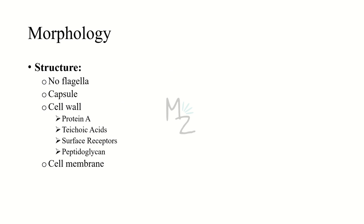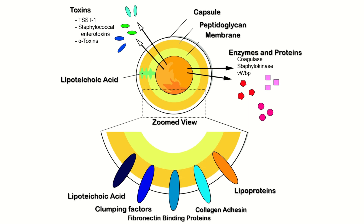Structure: Staphylococcus aureus has no motility apparatus like flagella, but it has a polysaccharide capsule, also called a microcapsule. The cell wall components and antigens include protein A, teichoic acid, surface receptors, and peptidoglycan. I have detailed videos on bacterial structure and Staphylococcus — watch those for a great grip on these four antigens and cell wall components.